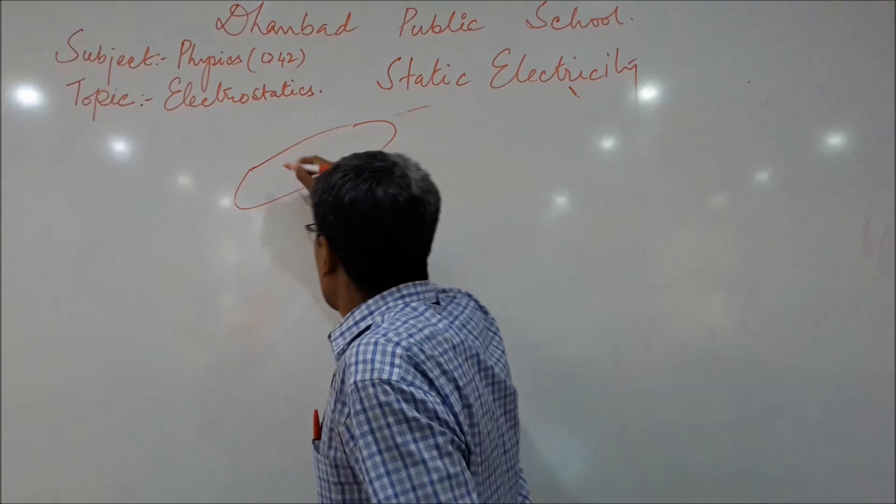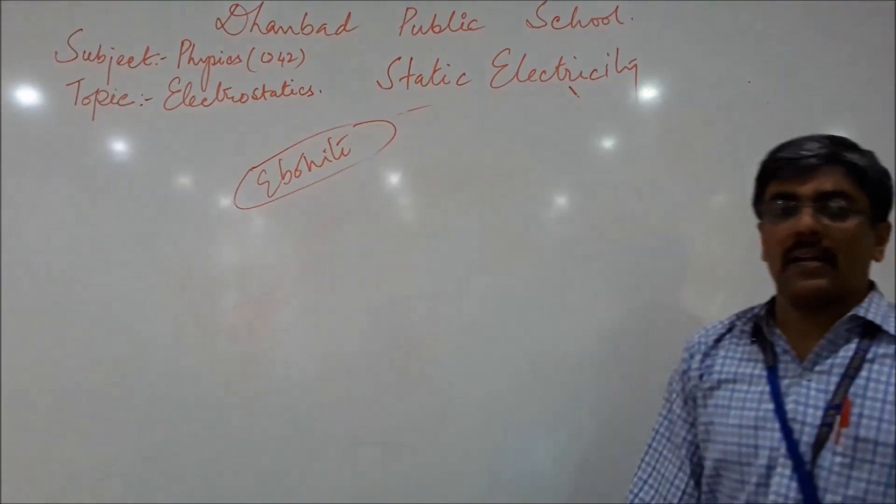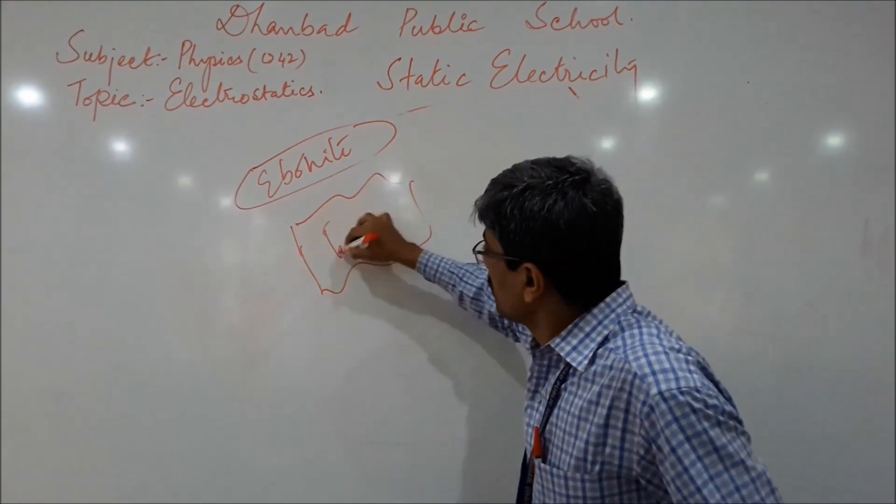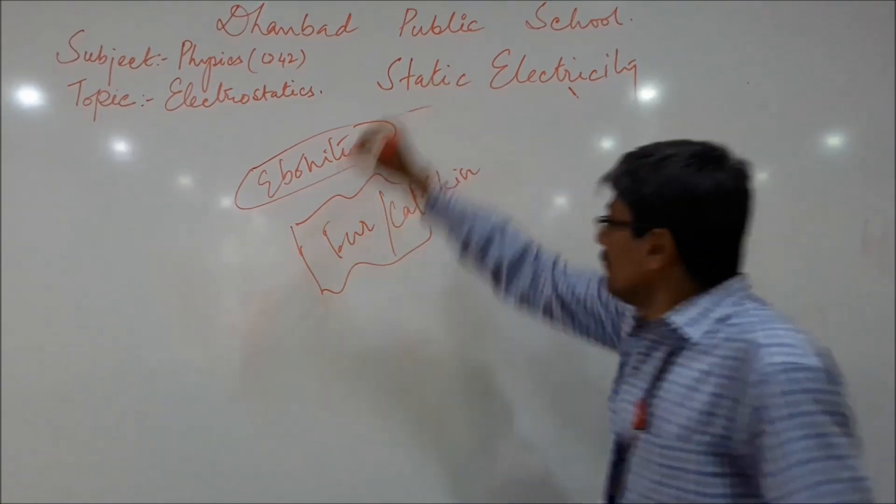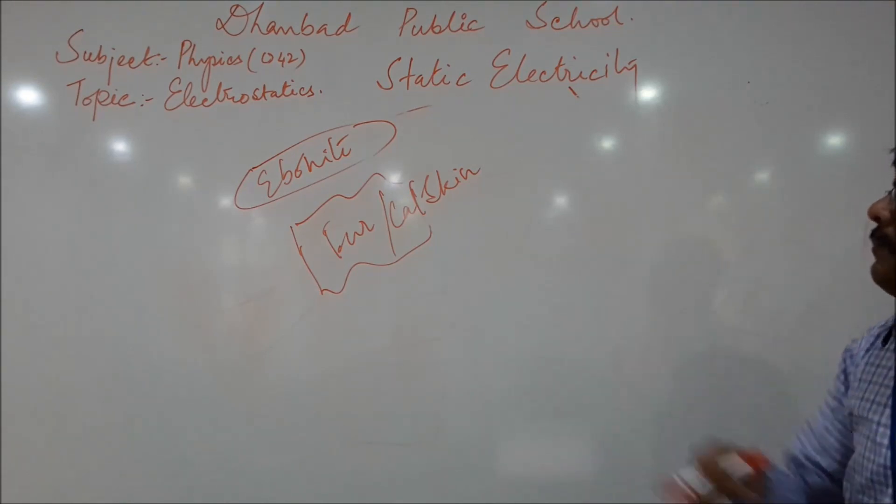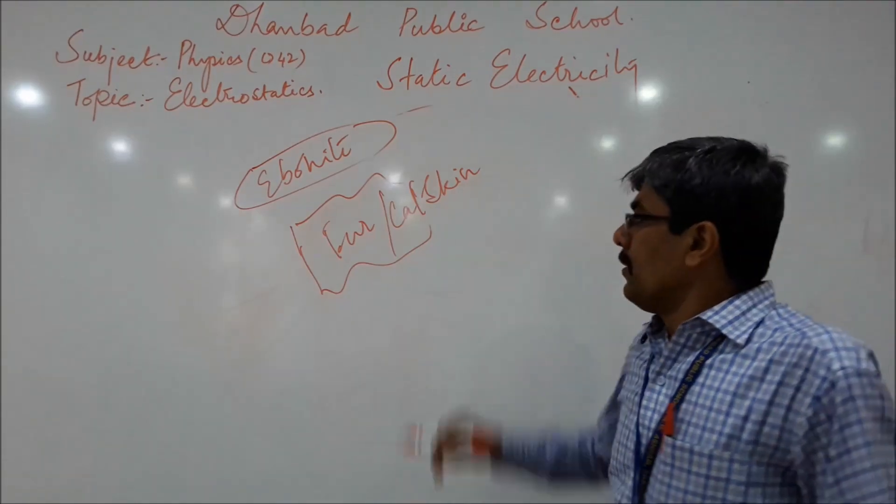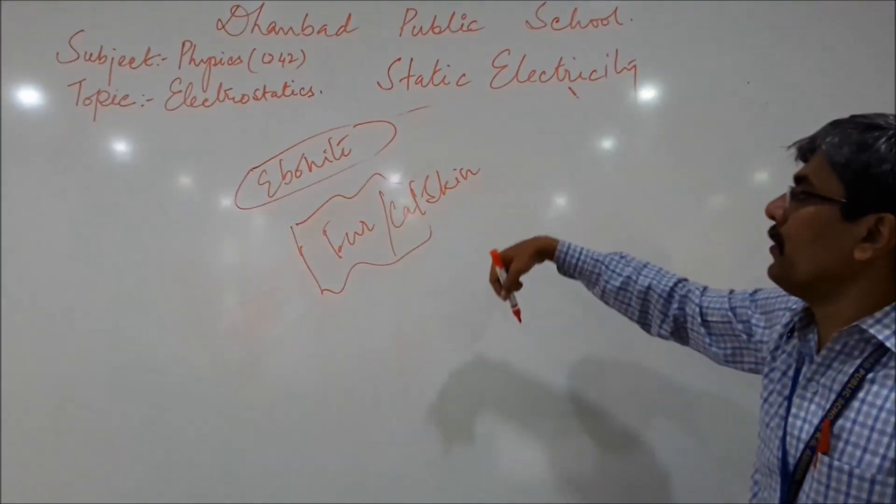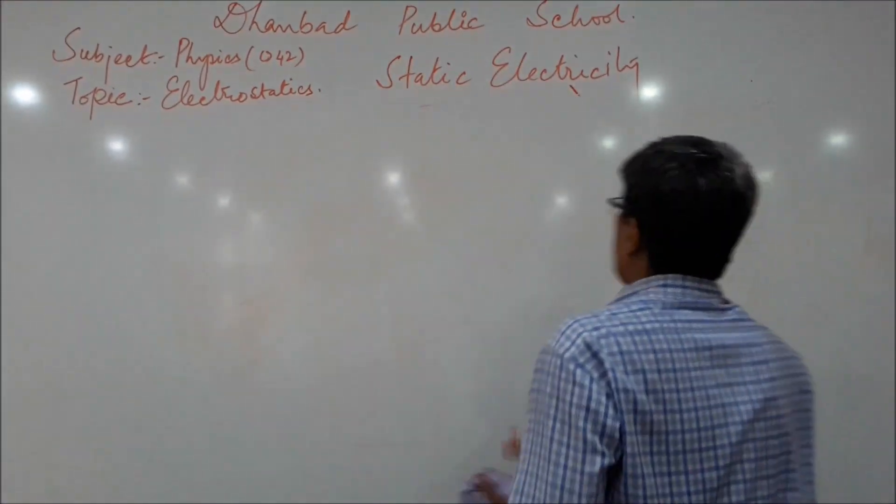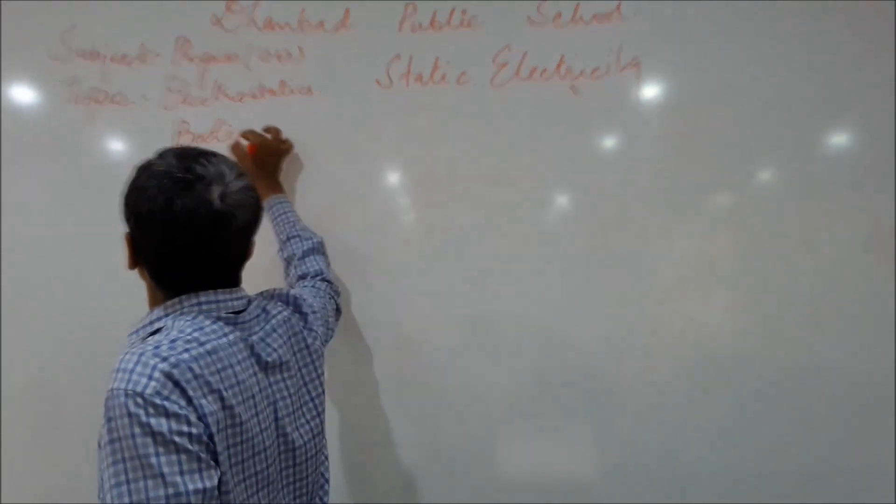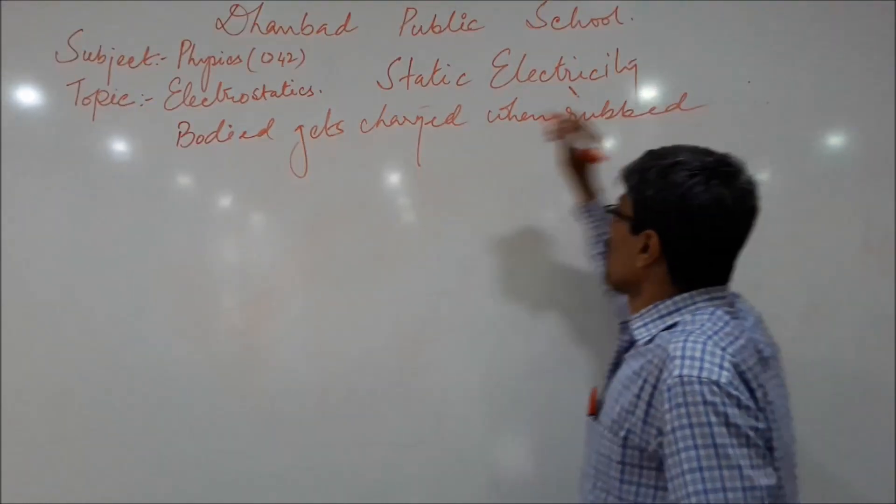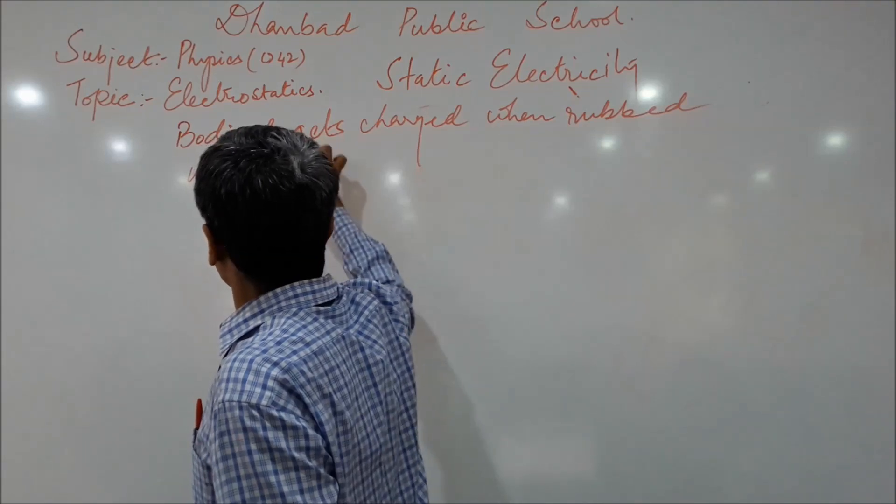Other examples, ebonite. You find ebonite in the handles of your pressure cooker, your switches. When ebonite is rubbed with fur, cat's fur, the same thing happens, the ebonite rod gets charged. But here, it's slightly different. Electrons are not removed from the ebonite into the fur. Rather, fur donates electrons or electrons are removed from the fur and they are relocated into the ebonite.